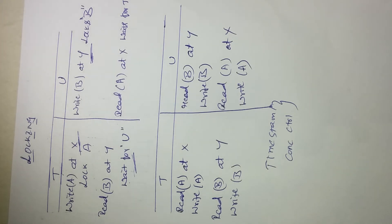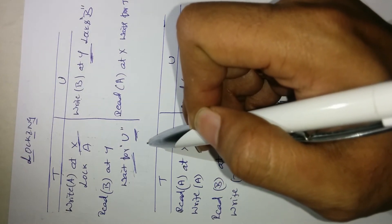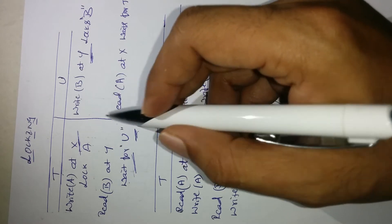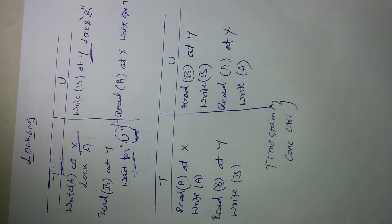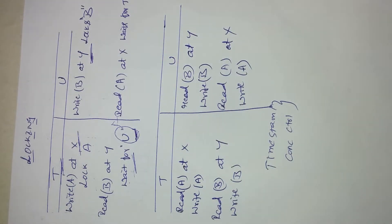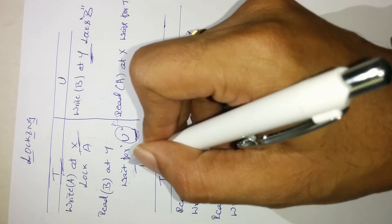The servers ensure that the version of an object accessed by transaction T at one server is consistent. If transaction U commits after the version accessed by T at one server, and if T and U access the same object at another server, they must commit in the same order. To achieve this, the same ordering conditions must be agreed upon across all servers.